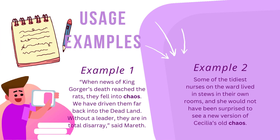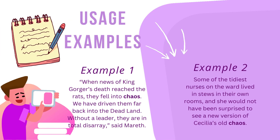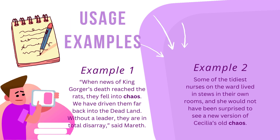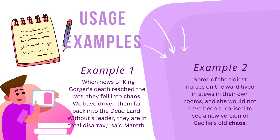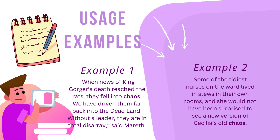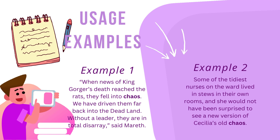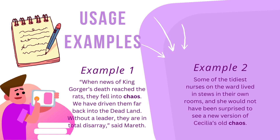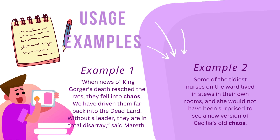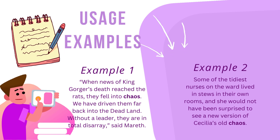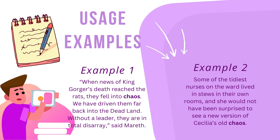Usage Examples. Example 1: When news of King Gorger's death reached the rats, they fell into chaos. We have driven them far back into the dead land. Without a leader, they are in total disarray, said Marith.